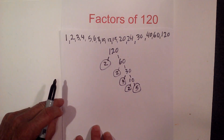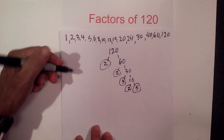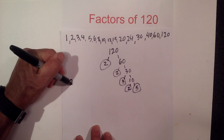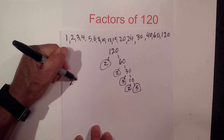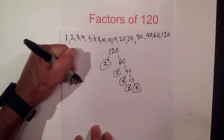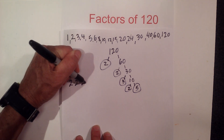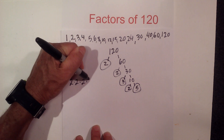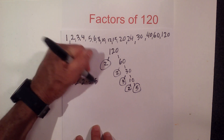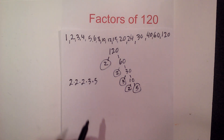Then 2 times 5 — circle both of these because they are prime. So the prime factorization of 120 is 2 times 2 times 2 times 3 times 5. Now let's find the multiples of 120.